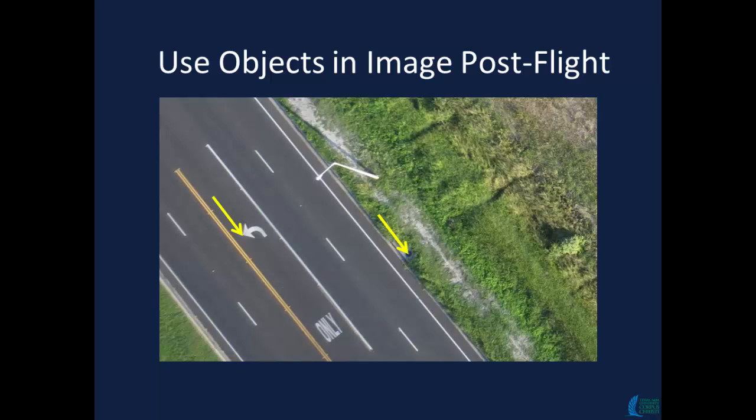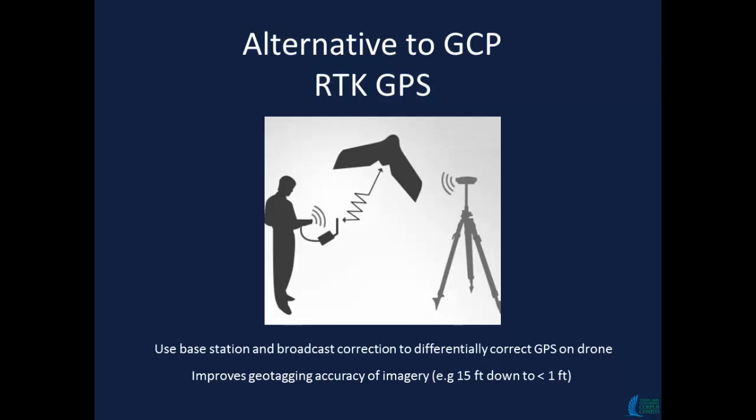One technique is RTK — real-time kinematic GPS. The basic idea is you set up a GPS base station on the ground, it records and measures where it thinks it is versus where it actually is, measures that error, and then sends a correction signal to the drone as it's flying, re-correcting its GPS position. When you tag the images with their locations, you can do it much more accurately. The whole idea is that when you plan your missions, you want five-centimeter positional accuracy so you can overlay imagery over time, watch crops growing, and keep that consistent.